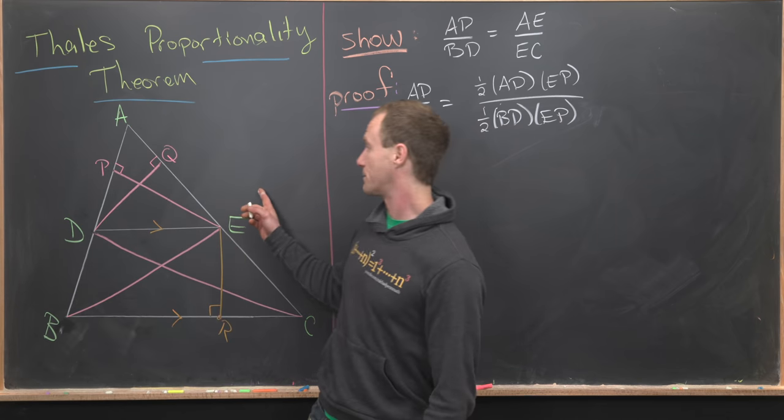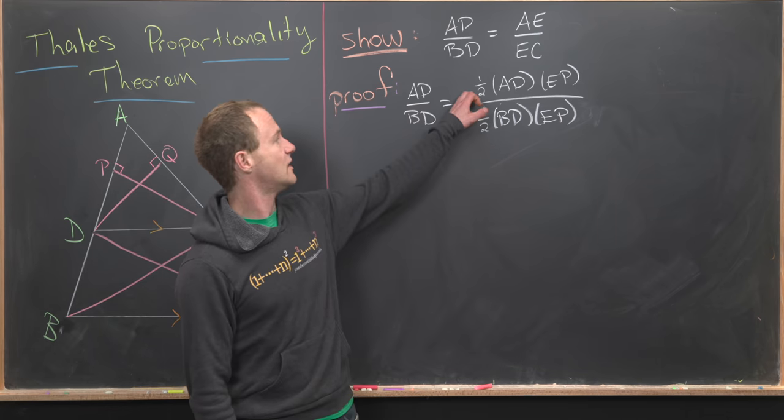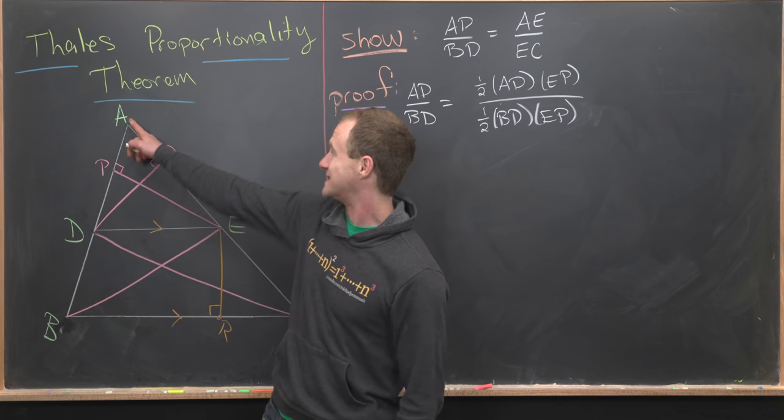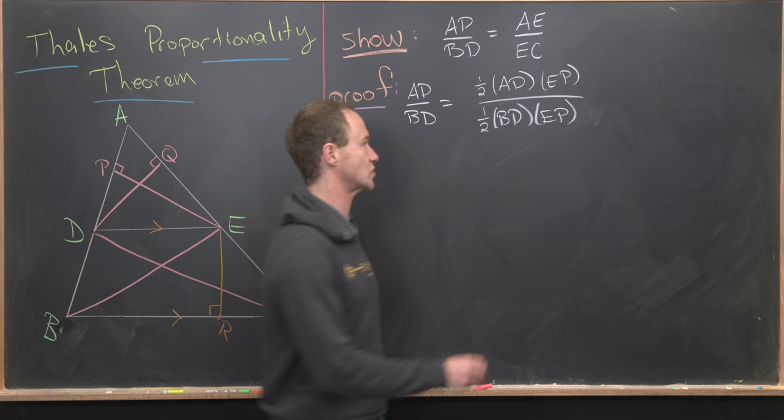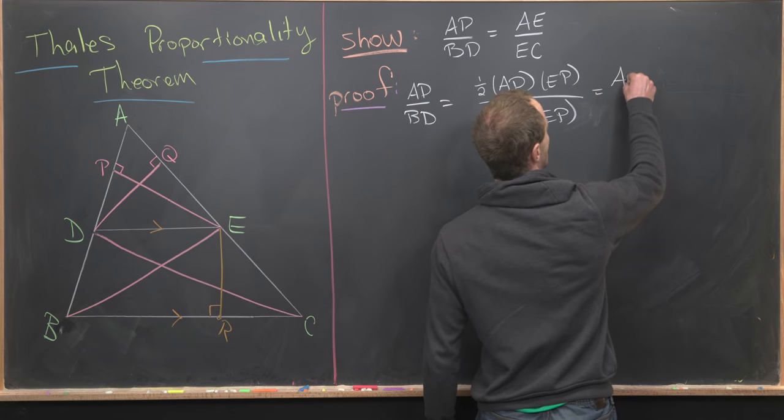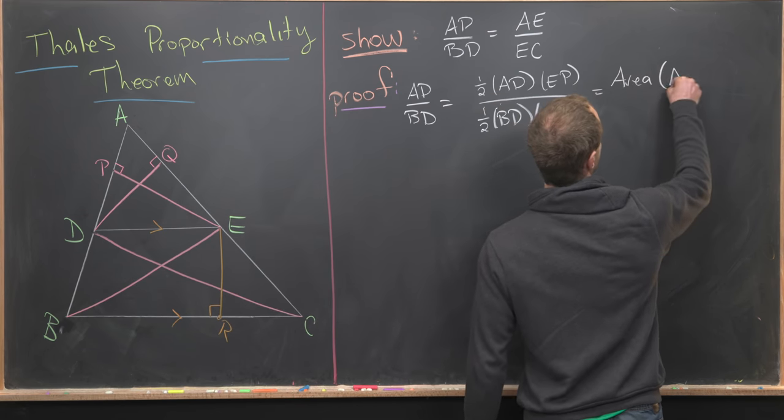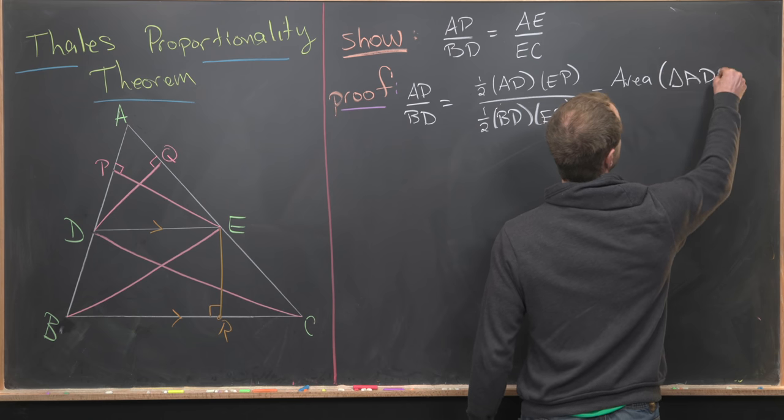Now we'll look at our picture and notice in the numerator we have exactly the area of this triangle ADE, which is this top portion here. So let's go ahead and write that in the numerator: area triangle ADE.